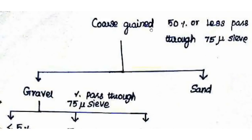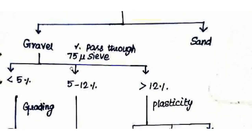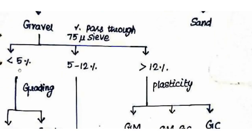Coarse-grained soils are classified based on the size of particles. If 50% or less passes through the 75-micron sieve, they are coarse-grained. If passing through 4.75mm sieve, particles are classified as sand; otherwise gravel. The classification by fines content is: less than 5%, 5 to 12%, and greater than 12% passing the 75-micron sieve.